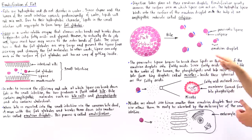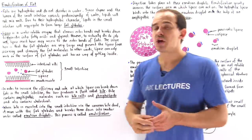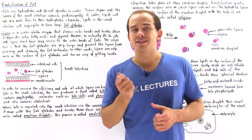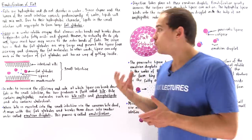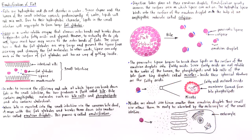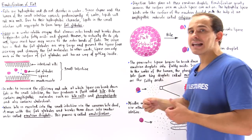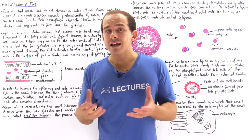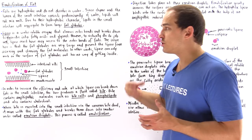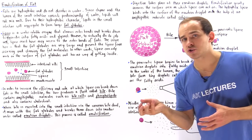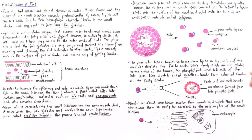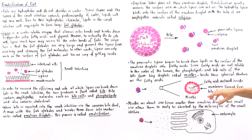As soon as the emulsion droplet is broken down into fatty acids, those fatty acids are themselves hydrophobic and cannot exist freely in the solution of the lumen. So the amphipathic phospholipids and bile salts secreted with the bile create a spherical structure around those fatty acids. This structure is known as a micelle.